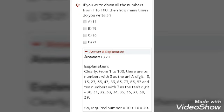Because clearly from 1 to 100, there are 10 numbers with 3 as the unit digit. Like 3, 13, 23, 33, 43, 53, 63, 73, 83, 93, etc. These are all the 3 are in unit digit, the 1's place. And 10 numbers with 3 as the 10's digit.